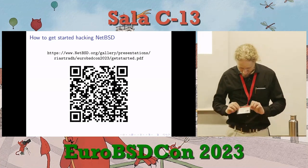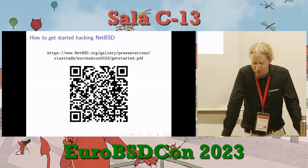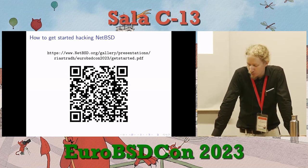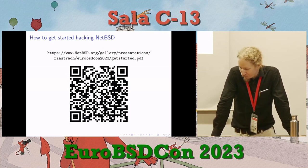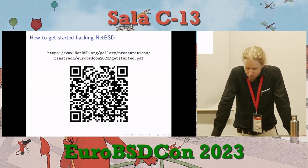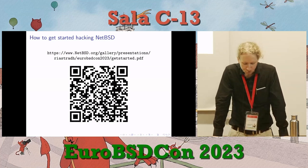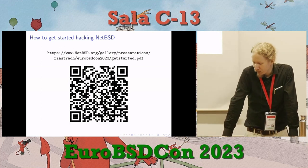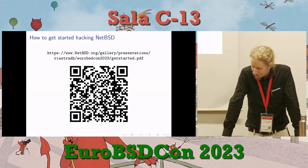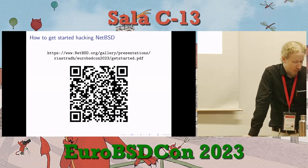My name is Taylor Campbell. There's very small text on this badge because the printers seem to have missed it. I also go by Riastradh in NetBSD. I'm on the core team of NetBSD. I've been using it for about 15 years, and I started hacking it fairly early on — I've been a NetBSD developer for about 12 years at this point. I work on various things in NetBSD, from networking to file systems to concurrency to drawing pretty pictures on the screen, which I'm not very good at.